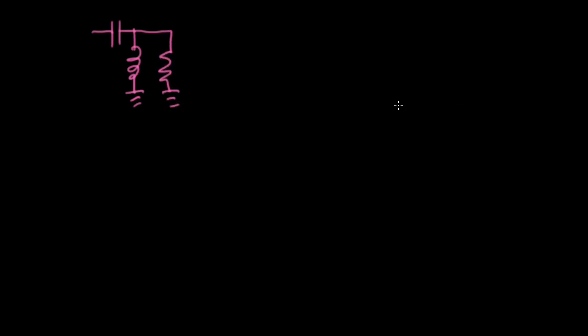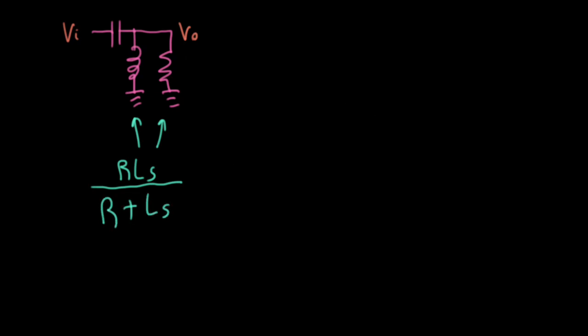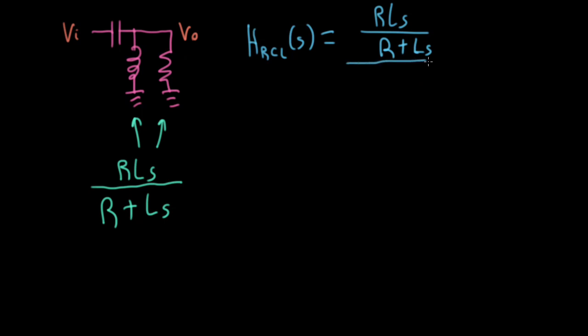The most common inductor-based design that I am aware of has a frequency-dependent core that consists of a capacitor with an inductor and a resistor in parallel. The input is on the left and the output is on the right. This parallel combination of the inductor and the resistor has an impedance of RLS over R plus LS. So the actual transfer function of this circuit — let me call it H_RCL — is going to be RLS over R plus LS, which is the impedance of this branch of our voltage divider, over 1/CS (the impedance of the capacitor) plus RLS over R plus LS.